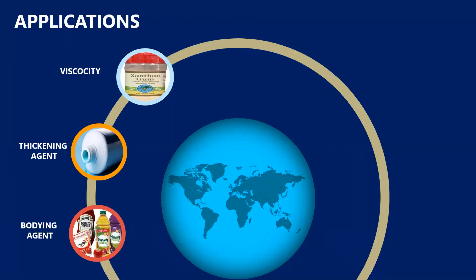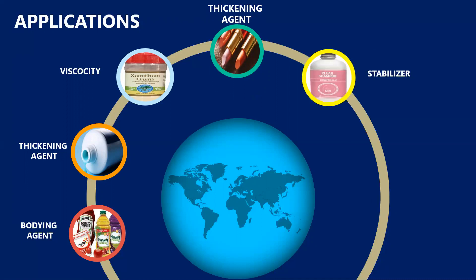Thickening agent again in cosmetics: pure xanthan is used in cosmetics to give that particular body and thickness to lipsticks. It is used as a stabilizer. Basically when we use a shampoo we get that lather; the foam can be stabilized by using xanthan.